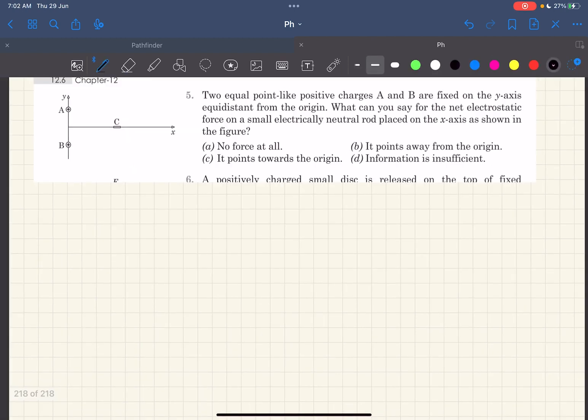So in this question, we have two equal point charges A and B that are fixed on the y-axis, which is equidistant from the origin. So they are asking, what can you say for the net electrostatic force on a small electrically neutral rod placed on the x-axis as shown in the figure? So there's a small electrically neutral rod, it doesn't have any charge and it's placed along the x-axis and we have to talk about what will be the force on this charge.